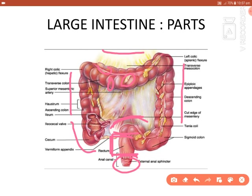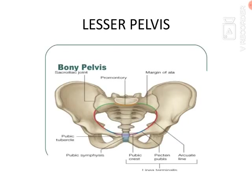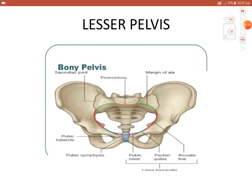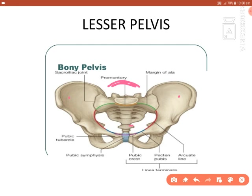To know the location of the rectum, you should have an idea about the bony pelvis. The bony pelvis consists of two hip bones — the right and left hip bones. Posteriorly there is the sacrum and sacral vertebrae, and inferior to the sacrum is the coccyx. Parts of the hip bone include the ilium, pubis, and ischium.